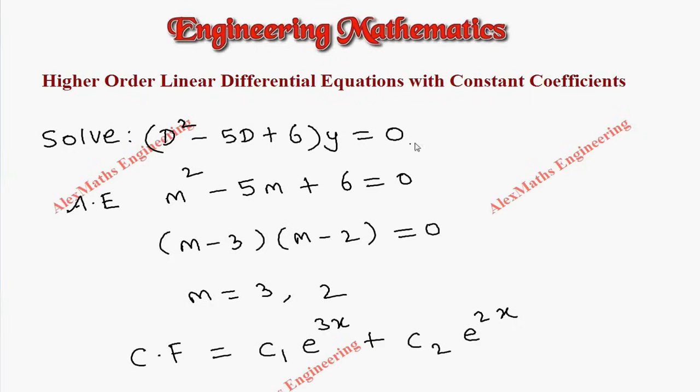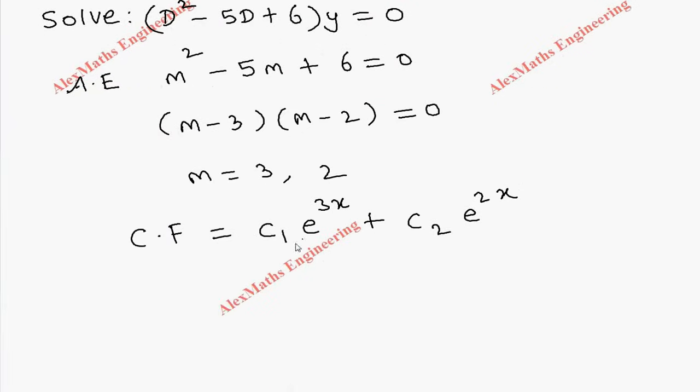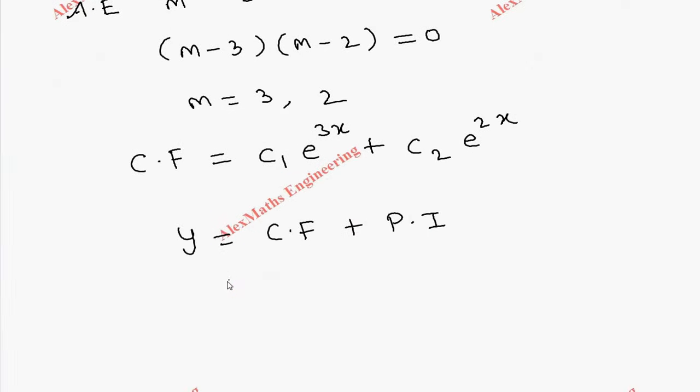And on the other side, we have 0. Therefore, there is no particular integral. So now, the solution y is nothing but CF plus PI. Since PI is 0, we have our solution itself, the complementary function: c₁e^(3x) plus c₂e^(2x).